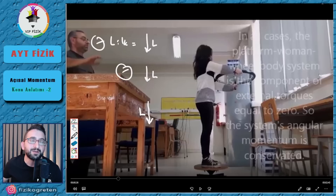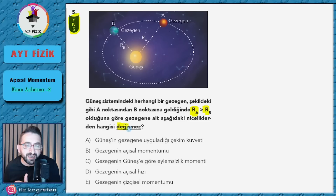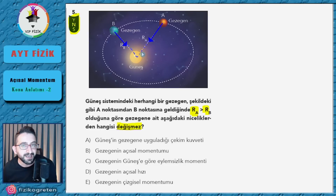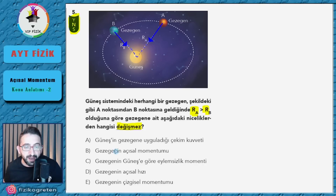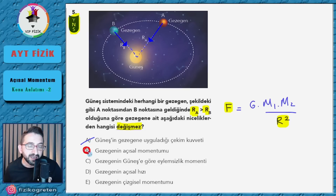Şimdi sorular çözerek olayı pekiştirelim. Güneş sistemindeki bir gezegen A noktasından B noktasına geldiğinde R_A > R_B olduğuna göre hangi nicelikler değişmez? Gezegene etkeden tek kuvvet kütle çekim kuvveti; onun uzantısı dönme noktasından geçtiği için herhangi bir torku yok. Dolayısıyla gezegenin açsal momentumu korunur.